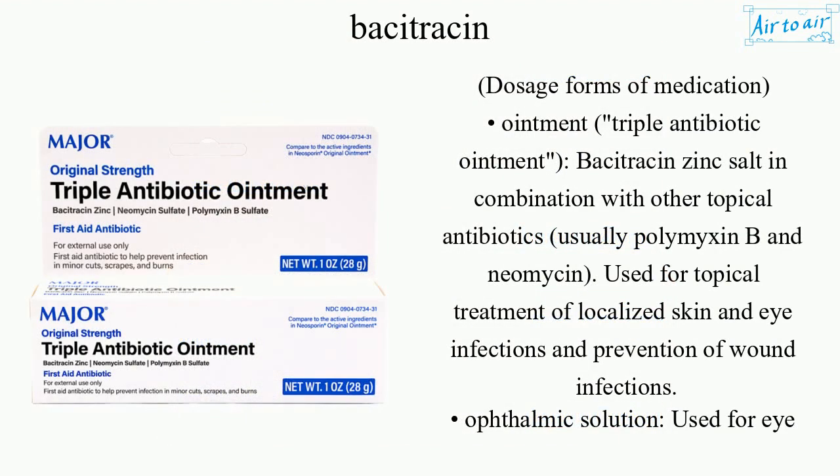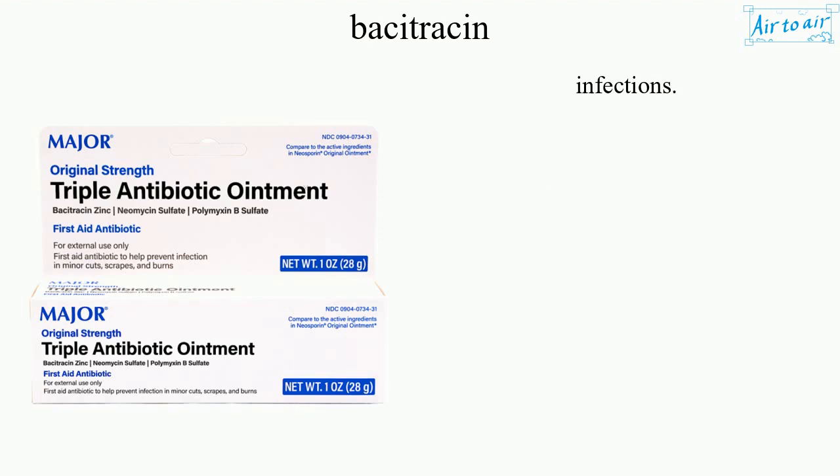Dosage forms include ointment, triple antibiotic ointment, and Bacitracin zinc salt in combination with other topical antibiotics — usually polymyxin B and neomycin — used for topical treatment of localized skin and eye infections and prevention of wound infections. An ophthalmic solution is also used for eye infections.